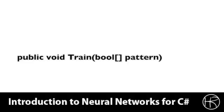The train method accepts a Boolean pattern that the Hopfield neural network will be trained for. The train method does not return anything. It will create a pattern that will be added to the weight matrix, allowing the Hopfield neural network to recognize this pattern. If you want to train the neural network for more than one pattern, simply call the train method multiple times. We will now take a look inside the train method and see how it processes the pattern and contributes to the weight matrix, allowing the Hopfield neural network to learn the new pattern being passed in.